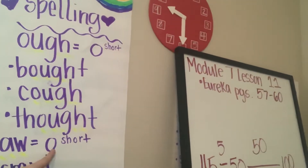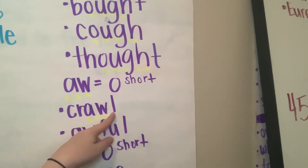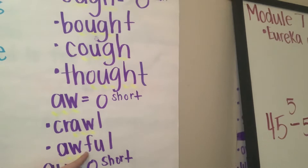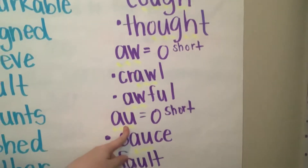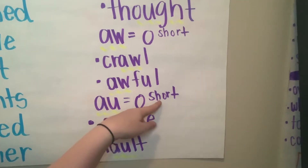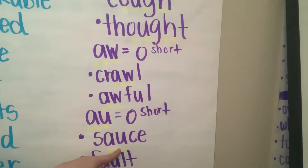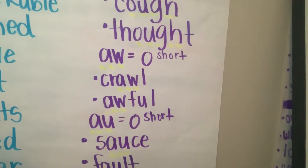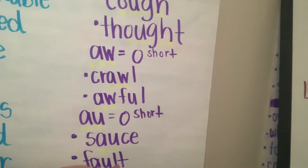A-W makes the 'ah' sound, such as 'crawl' — CR, ah, L — or 'awful' — ah, FUL. It can also be made using A-U letter combinations making the 'ah' sound, such as 'sauce' — S, ah, S (soft C) — and 'fault' — F, ah, L, T.